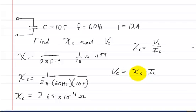We already solved for the capacitive reactance. That's going to be equal to 2.65 times 10 to the negative 4 multiplied by the current in the capacitor, which is 12 amps. If you multiply that through, you're going to get about 0.003 volts. That's how you would solve for that one.